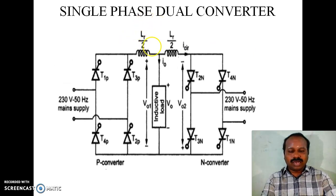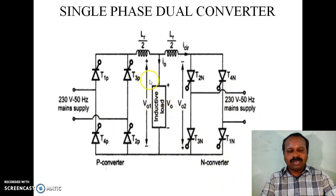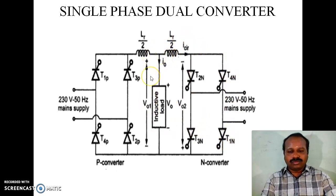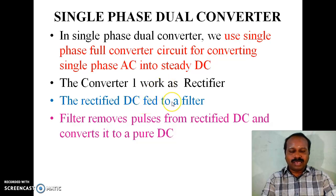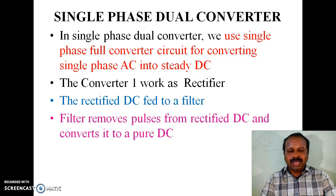This is the single-phase dual converter circuit with a positive converter (P converter) and a negative converter, connected back-to-back to a common inductive load. A current-limiting reactor is inserted on both converters to limit the circulating current ICR, which flows through the converters only, not through the load. In the single-phase dual converter, a single-phase full converter circuit is used to convert single-phase AC into steady DC. Converter 1 works as a rectifier; the rectified DC feeds to a reactor which acts as a filter, removing ripples and converting it to pure DC.